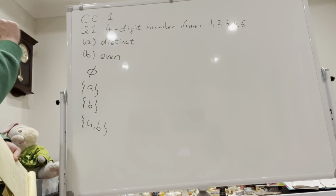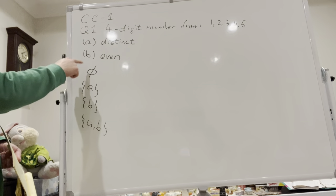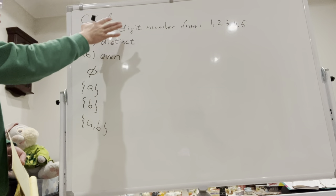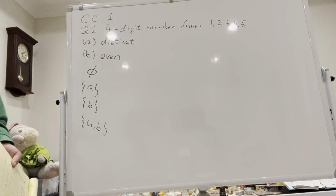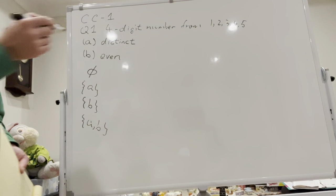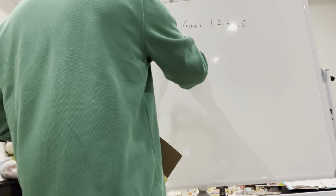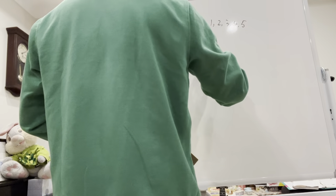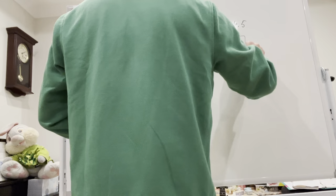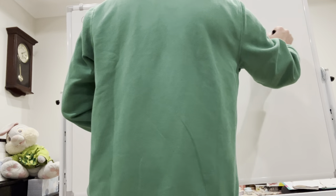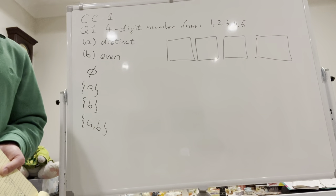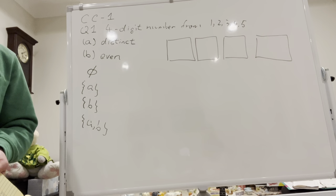Let's do this one by one. The empty set condition means we can ignore both conditions — just how many different ways to make a four-digit number from 1, 2, 3, 4, 5. This brings us to what I describe as the most important part of this class: the three principles — addition, multiplication, and subtraction.